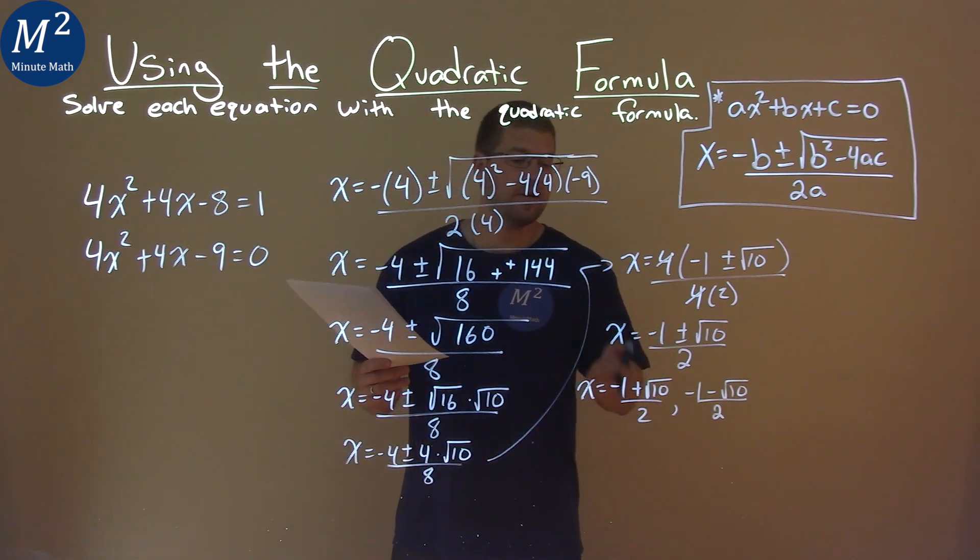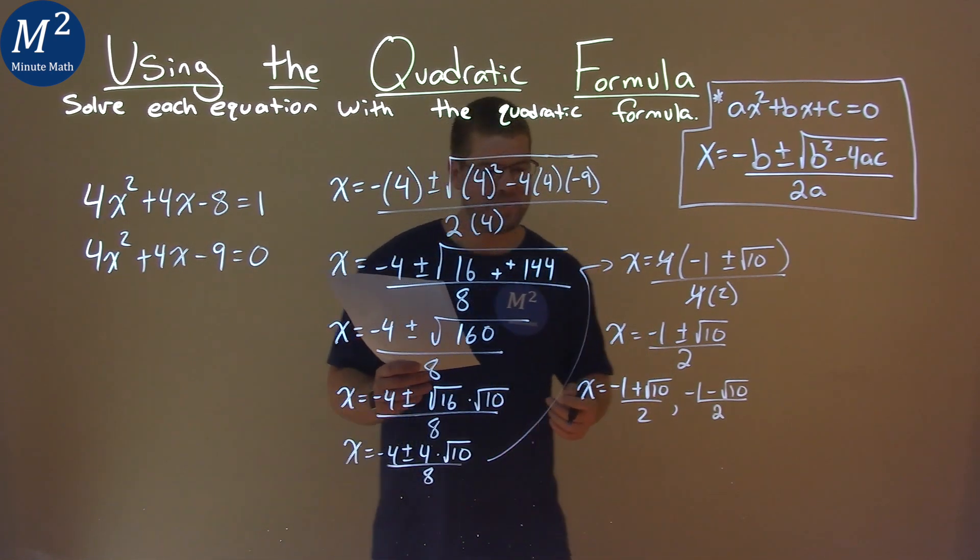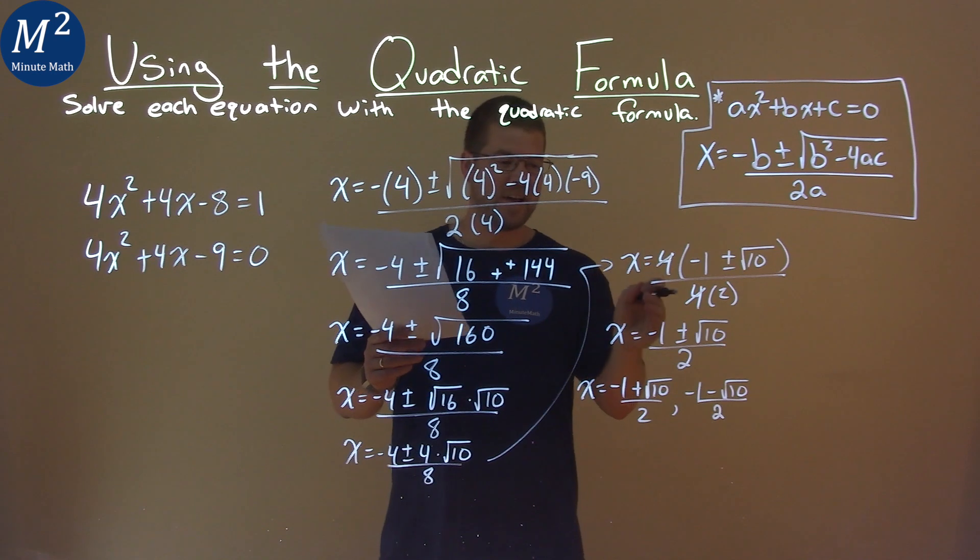And so, our final answer here is x equals negative 1 plus square root of 10 over 2, and negative 1 minus the square root of 10 over 2.